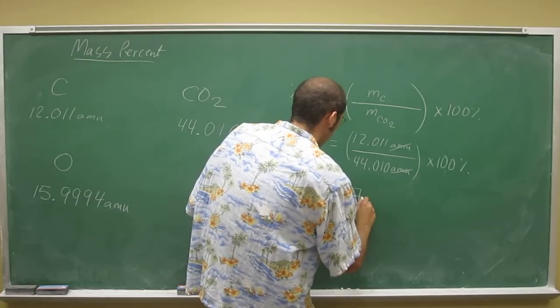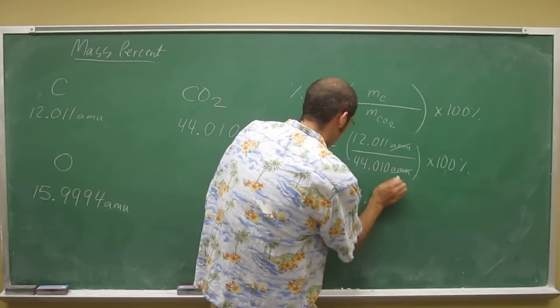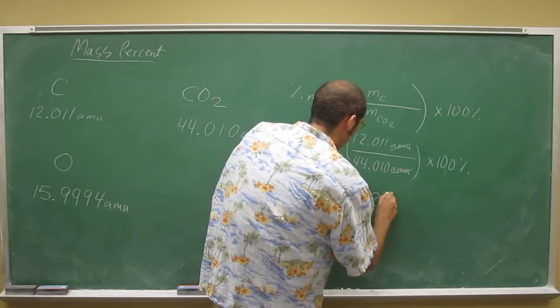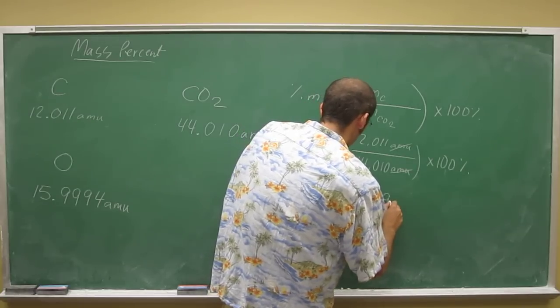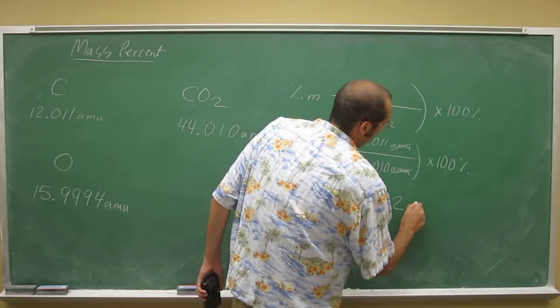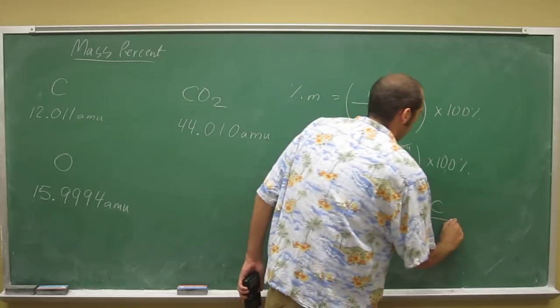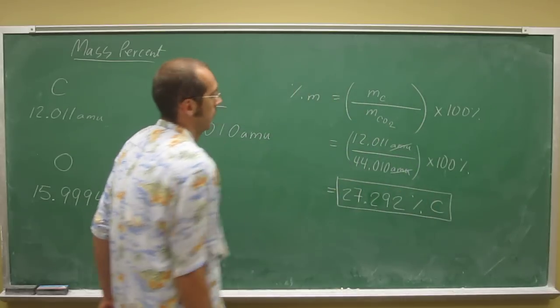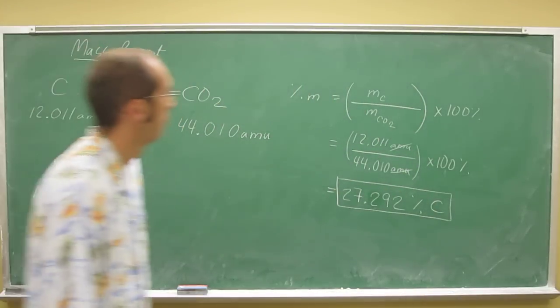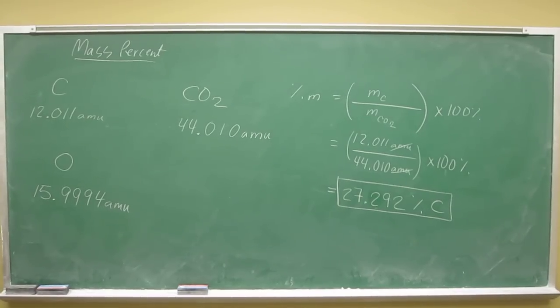27.292... one, two, three, four, five, right? Percent carbon in carbon dioxide. We've got to round up because that's six. Next, we'll do the percentage of oxygen.